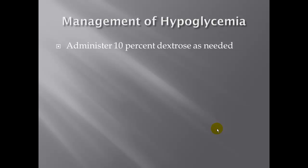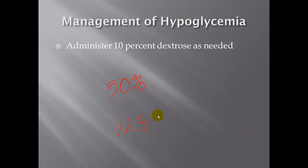When managing hypoglycemia in the neonate, we administer 10% dextrose. We generally have it in the form of 50% dextrose. A quick way to achieve around a 10% concentration is to prepare a 12.5% solution by squirting three-quarters of the dextrose 50% out and then filling it up with normal saline. This gives us a 12.5% solution, and then we can give them one to two milliliters per kilogram.